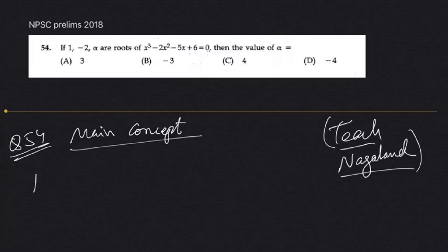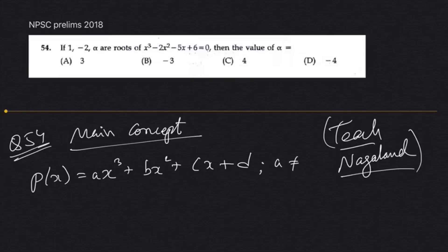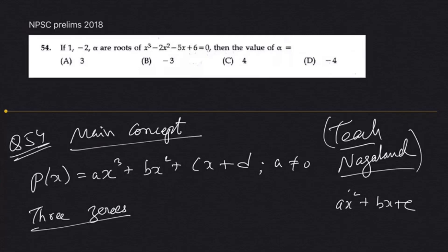The main concept is: for a cubic polynomial — that is ax³ + bx² + cx + d — such that a should not be zero, we will have three roots, three zeros. Like the quadratic equation in class 10, which is ax² + bx + c, there we have two zeros: alpha and beta.